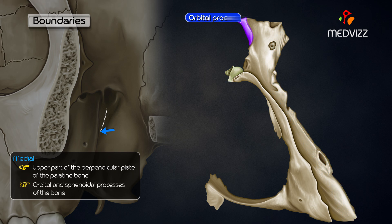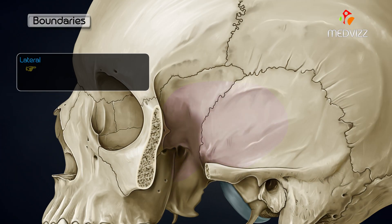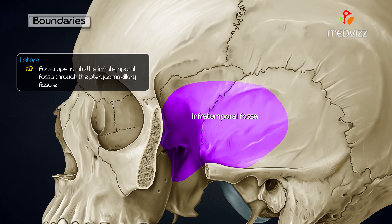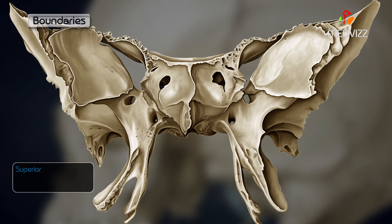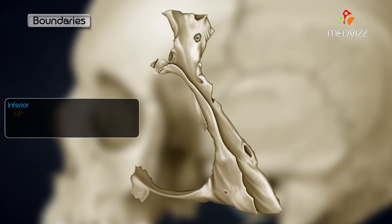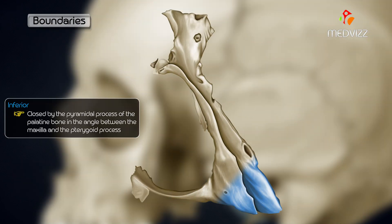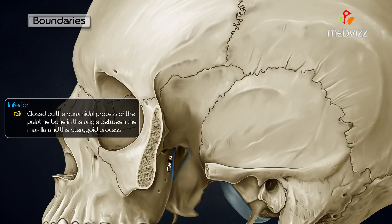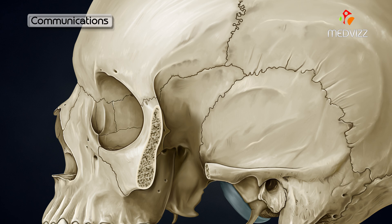The orbital and sphenoidal processes of the palatine bone also take part in the medial wall. Laterally, the fossa opens into the infratemporal fossa through the pterygomaxillary fissure. Superiorly, it is bounded by the under surface of the body of the sphenoid, and inferiorly it is closed by the pyramidal process of the palatine bone, in the angle between the maxilla and the pterygoid process.